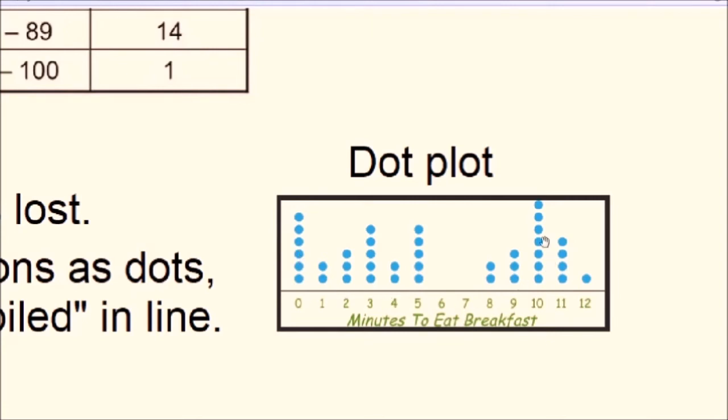And we see that data is split into two clusters, with up to five minutes spent on eating breakfast, and between eight and twelve minutes spent on eating breakfast. This is an example of how dot plot illustrates the data.